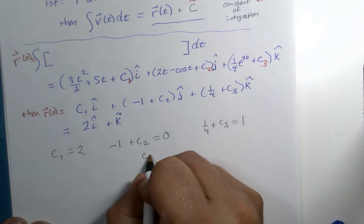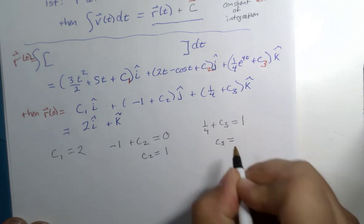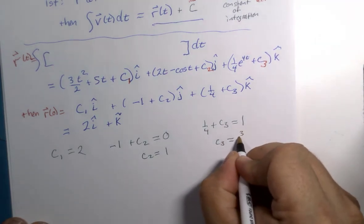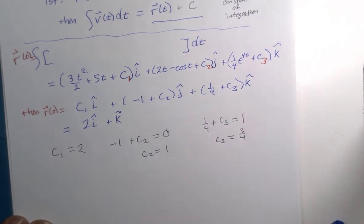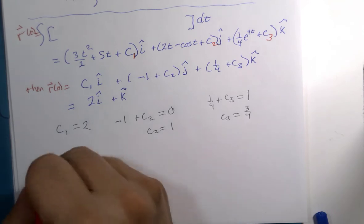So in this case, c2 is going to equal 1. And c3 is going to equal, oh, do you have the brain power? I think it's going to be 3 fourths. So I have to answer the question. What was the position vector?